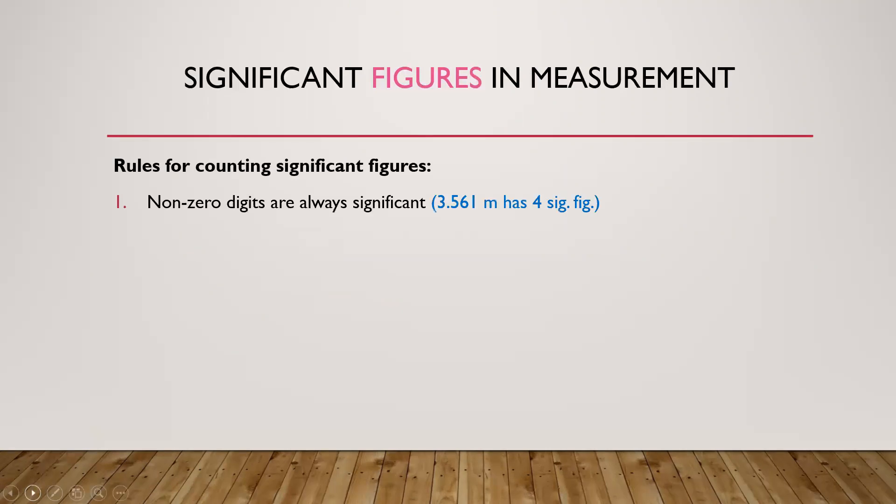Rule number 1: Non-zero digits are always significant. For example, 3.561 meters has 4 significant figures.